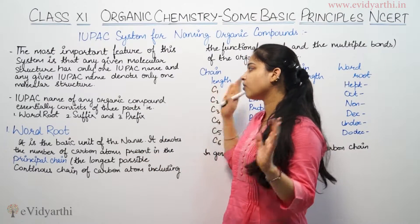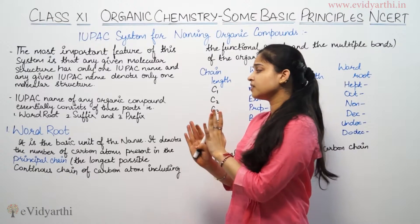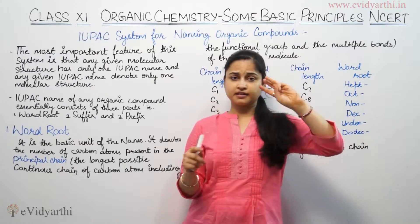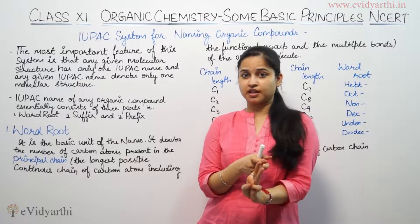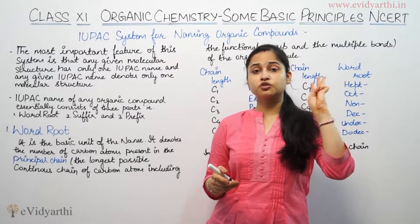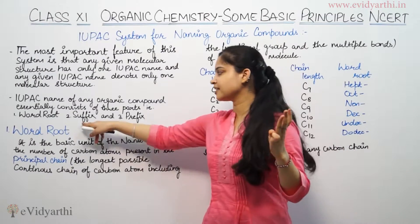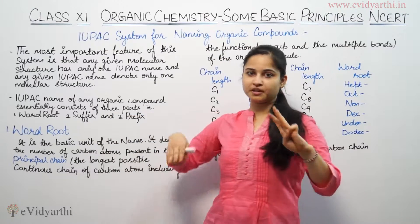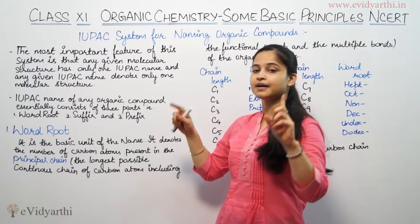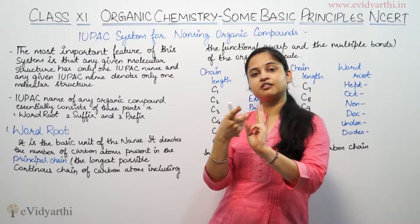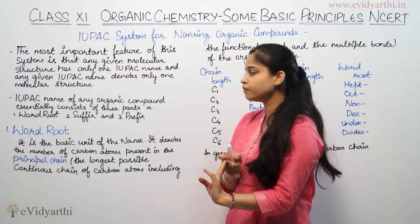The IUPAC name of any organic compound essentially consists of three parts. If we want to do compound nomenclature, we should remember three parts. The three parts are: first part is word root, second is suffix, and third is prefix. So let's move on to word root.